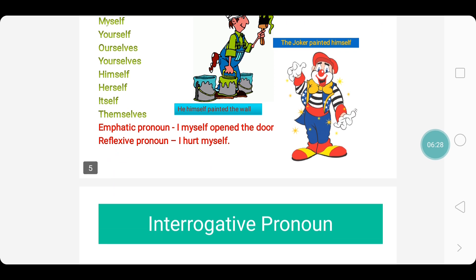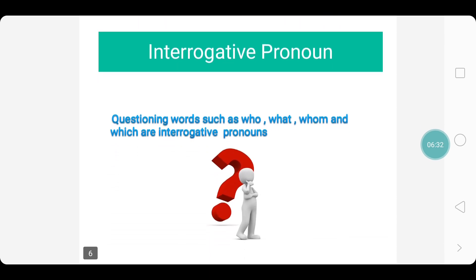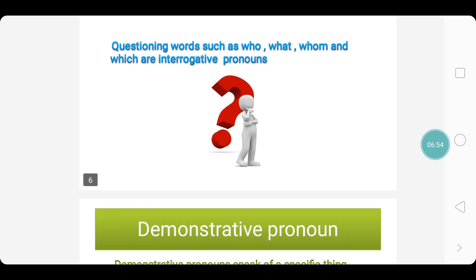Hope you understood the difference between emphatic and reflexive pronoun. Now let's go into interrogative pronouns. Interrogation means question. Questioning words such as who, what, whom and which are interrogative pronouns. For example: who are you, what are you doing — these are examples of interrogative pronouns.